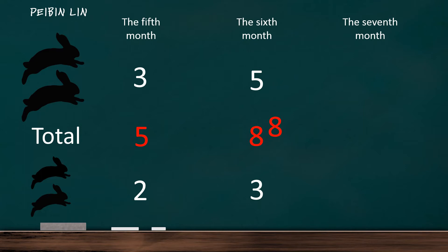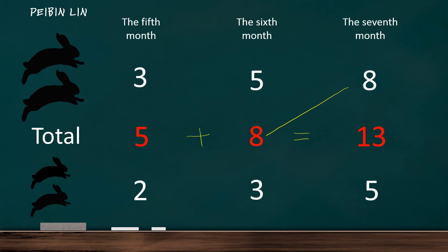By the seventh month, all the rabbits from the previous month had grown into eight pairs of adults, and the adults from the last month had produced five pairs of newborn rabbits. So the total pairs of rabbits are 13. You must have noticed that the pairs of rabbits in this month is equal to the sum of the pairs of rabbits in the previous two months. For example, in month 7, the total pairs of rabbits are equal to the sum of the adult rabbits and the newborn rabbits of this month. The pairs of adult rabbits in this month is equal to the total pairs of rabbits in last month, and the pairs of rabbits born at the beginning of the month is equal to the total pairs of rabbits from the fifth month. So we're right.